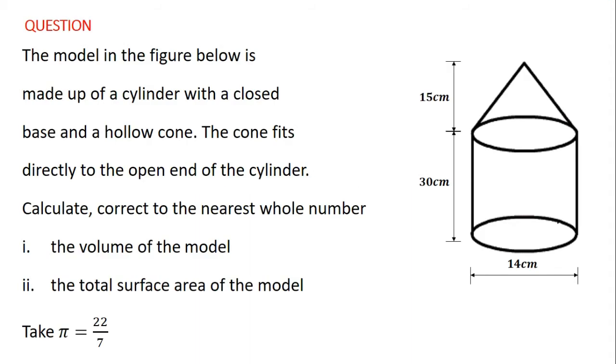We are still on the topic of mensuration. In the previous video we solved a question on finding the total surface area and volume of a triangular pyramid. In this video we are going to solve a question on finding the total surface area and volume of composite shapes. The question is: the model in the figure below is made up of a cylinder with a closed base and a hollow cone. The cone fits directly to the open end of the cylinder. Calculate to the nearest whole number: (i) the volume of the model, (ii) the total surface area of the model.